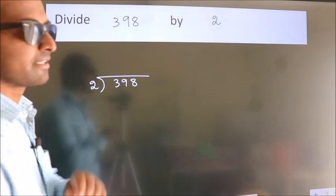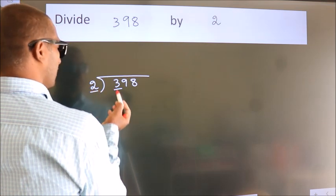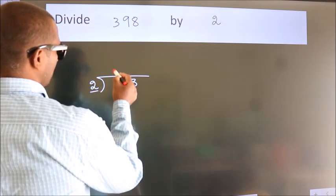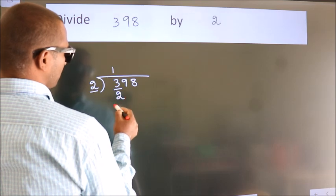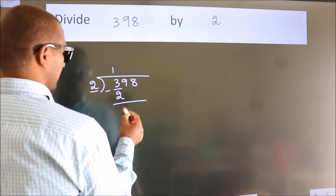Next, here we have 3, here 2. A number close to 3 in 2 table is 2 ones 2. Now, we should subtract. We get 1.